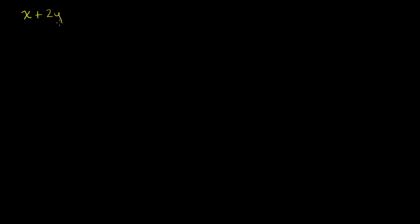So let's say you had two equations. One is x plus 2y is equal to 9, and the other equation is 3x plus 5y is equal to 20. If we did what we did in the last video, we could graph each of these — these are lines. You could put them in slope-intercept form or point-slope form; they're in standard form right now.